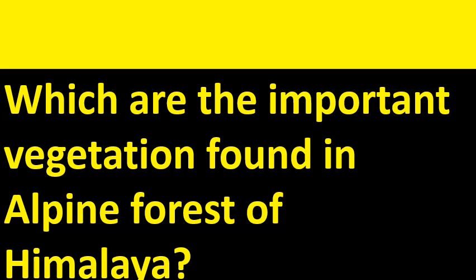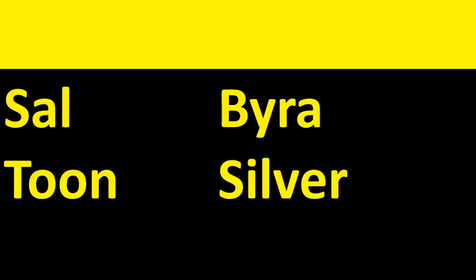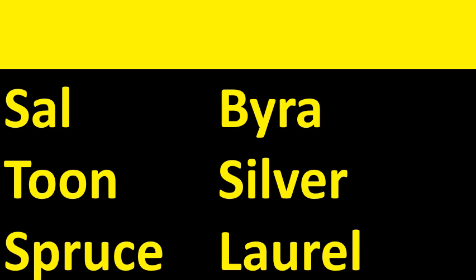Which are the important vegetation found in alpine forests of Himalaya? Sal, Baira, Toon, Silver, Spruce, and Laurel trees are found in the alpine vegetation.